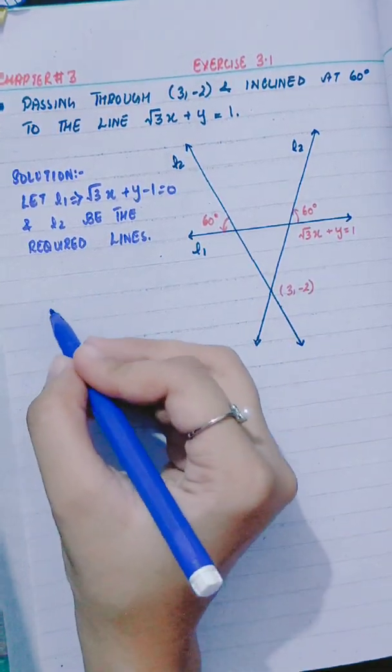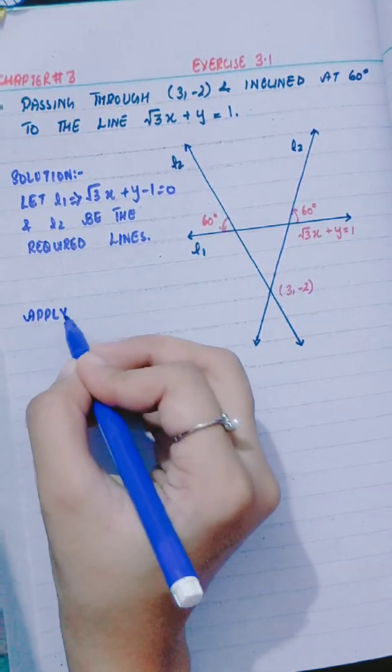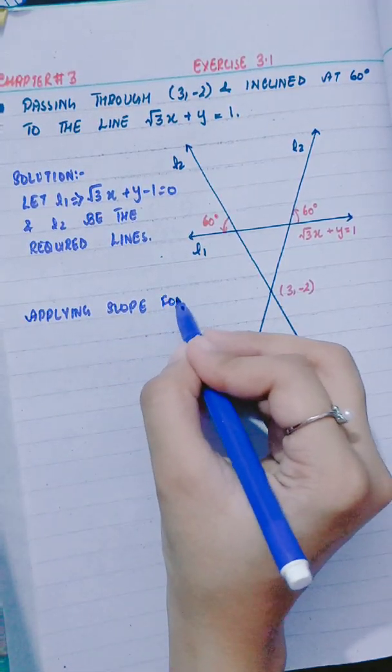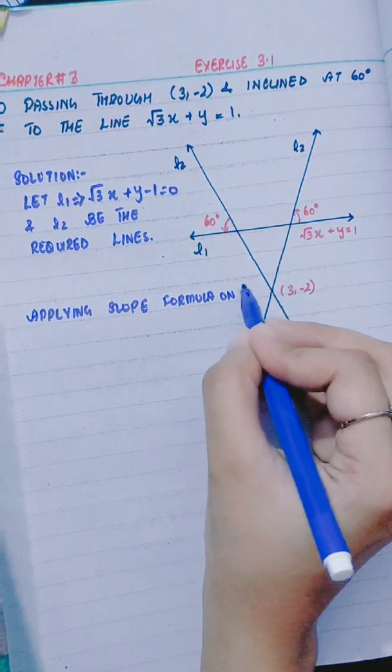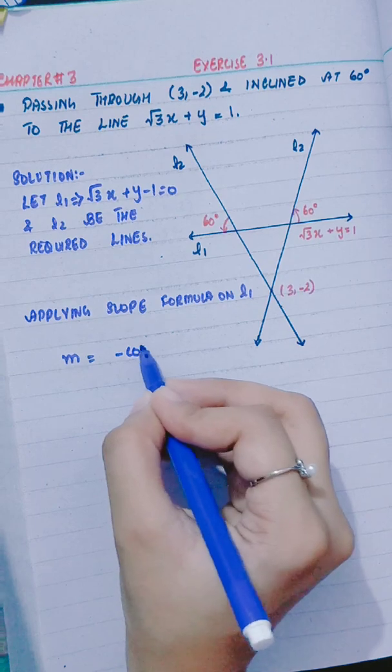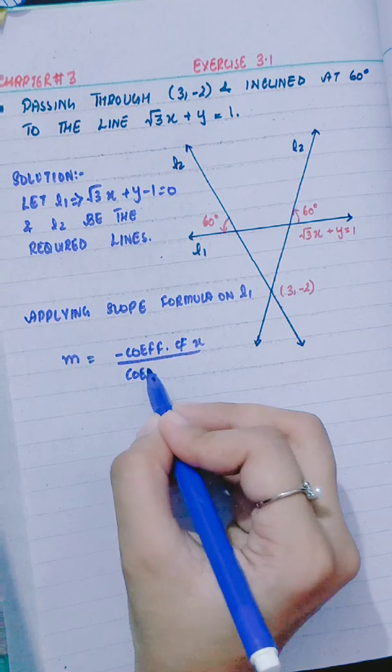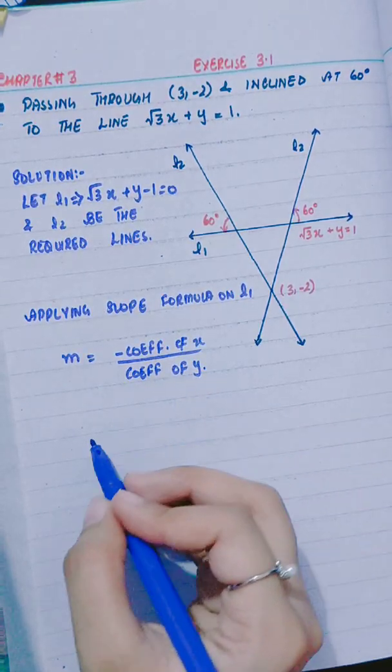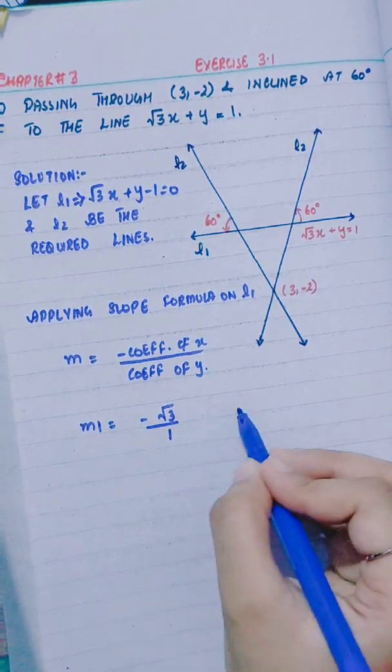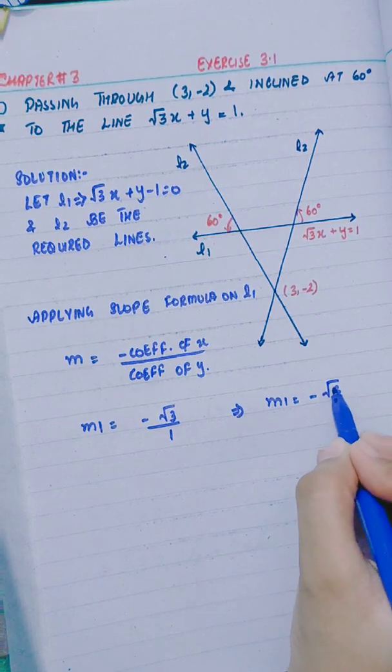First we find slope of L1 applying slope formula. M = -coefficient of x divided by coefficient of y. M1 = -√3/1, so M1 = -√3.